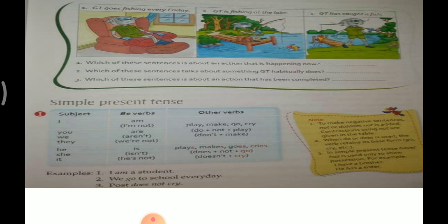'GT is fishing at the tip of the lake.' 'GT has caught a fish.' So, which of these sentences is about an action that is happening now? Which sentence talks about something GT habitually does? Which sentence is about an action that has been completed?